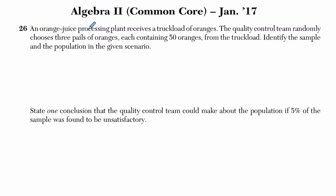It says an orange juice processing plant receives a truckload of oranges. The quality control team randomly chooses three pails of oranges, each containing 50 oranges, from the truckload.